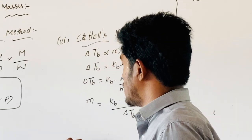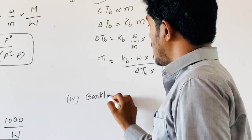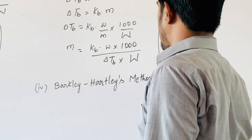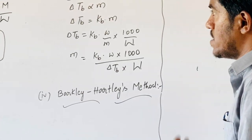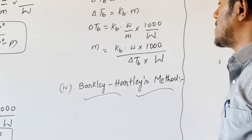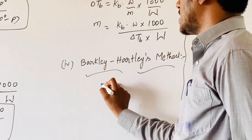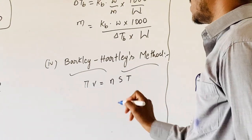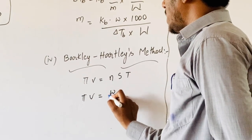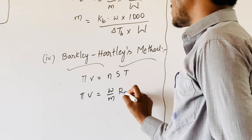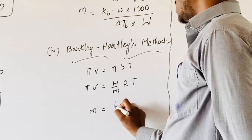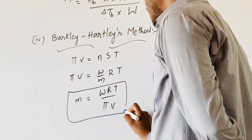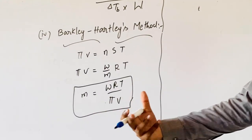Now coming to the fourth method, that is the Berkeley-Hartley Method. These two scientists combined their work for the calculation of molecular mass of a non-volatile solute in a given solution, with respect to the osmotic vessel. The equation is: pi V equals nRT, where n equals weight by gram molecular weight, and R is the universal gas constant T. From this, M equals W times R times T, divided by pi times V. This method also allows calculation of molecular mass of a non-volatile solute in a given dilute solution.